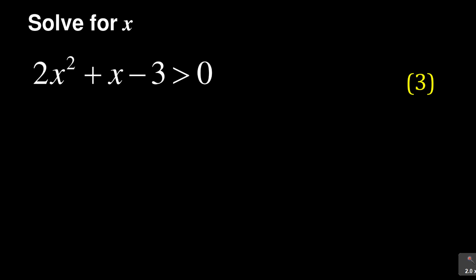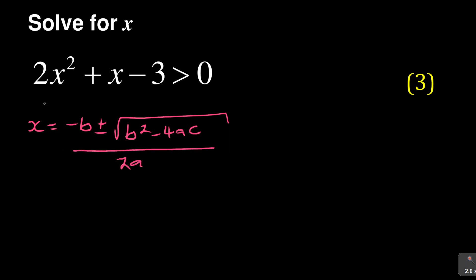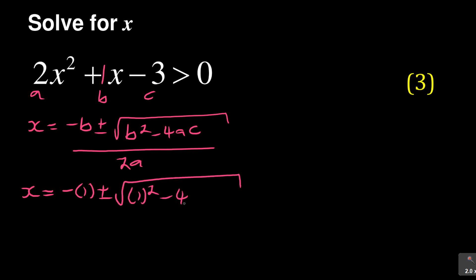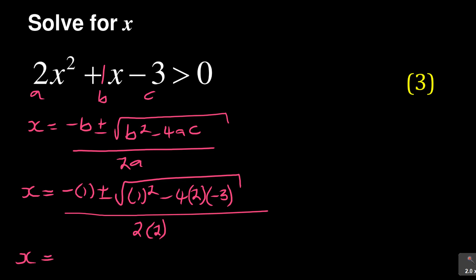Let's look at the quadratic equation: x equals negative b plus or minus square root of b squared minus 4ac, all over 2a. Here my a is 2, my b is 1, and my c is minus 3. If you don't know the quadratic equation, you definitely need to gain more practice on that.